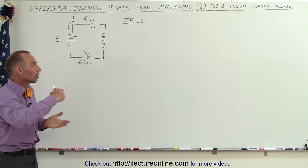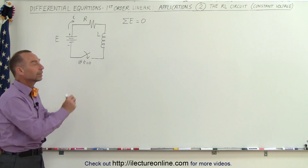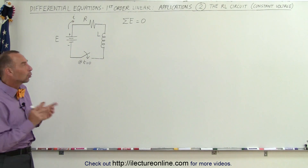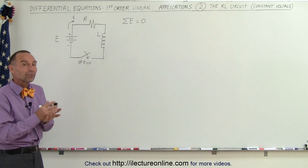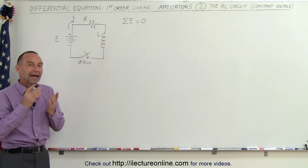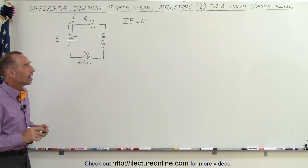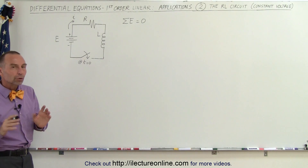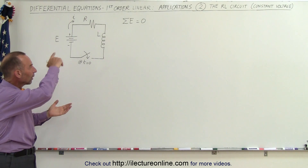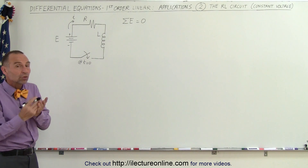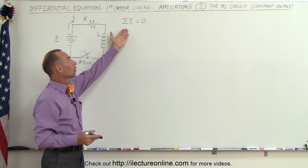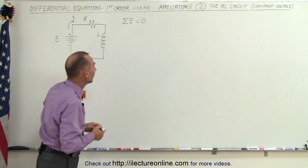complete the circuit and current begins to flow. We want to find an equation that describes the current flow through the circuit as a function of time. We're going to use the technique where we sum up all the voltages around the circuit, which will add up to zero — that's Kirchhoff's rule.